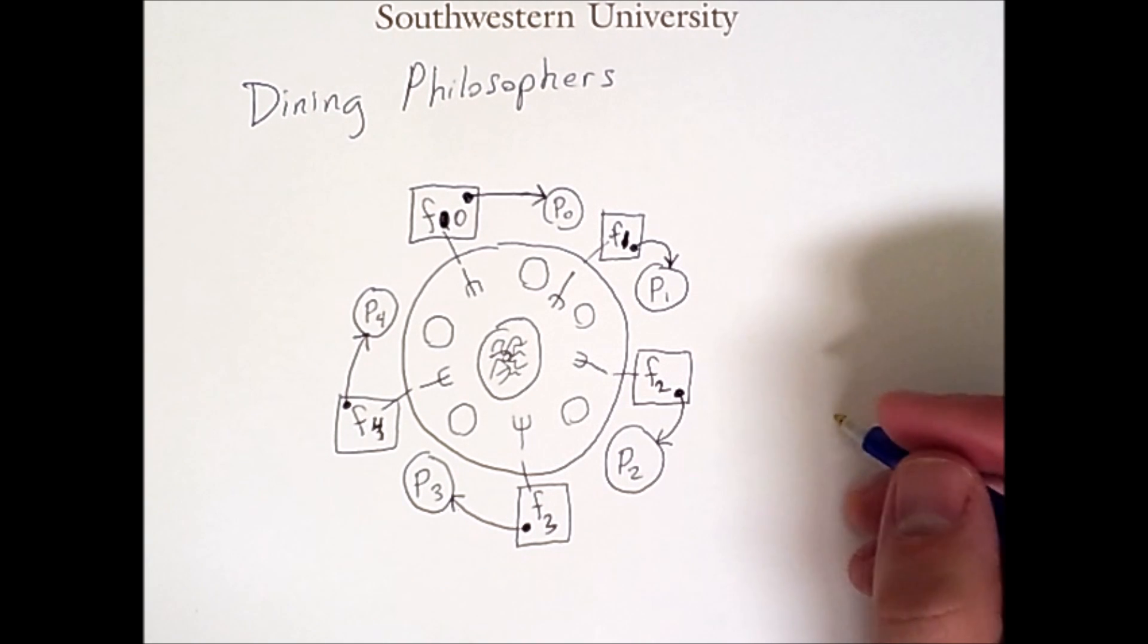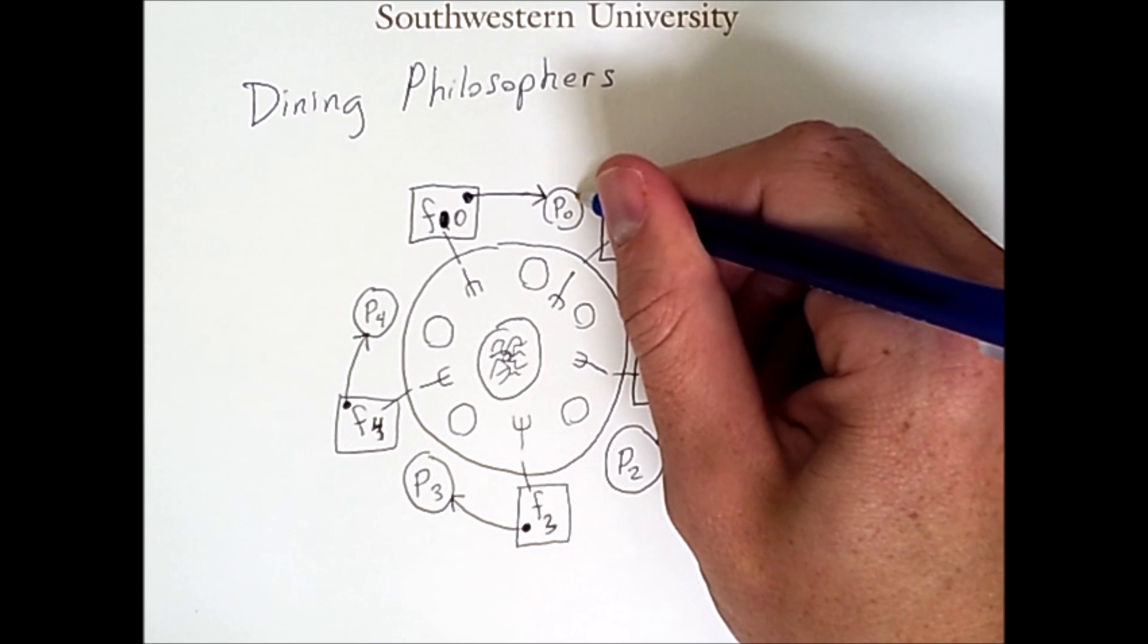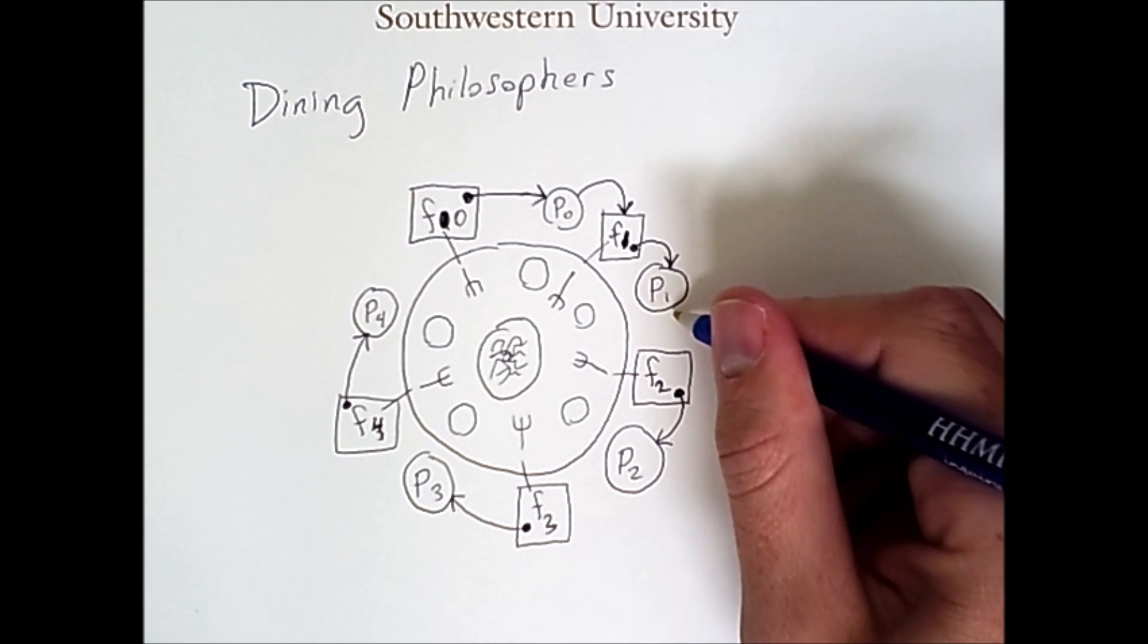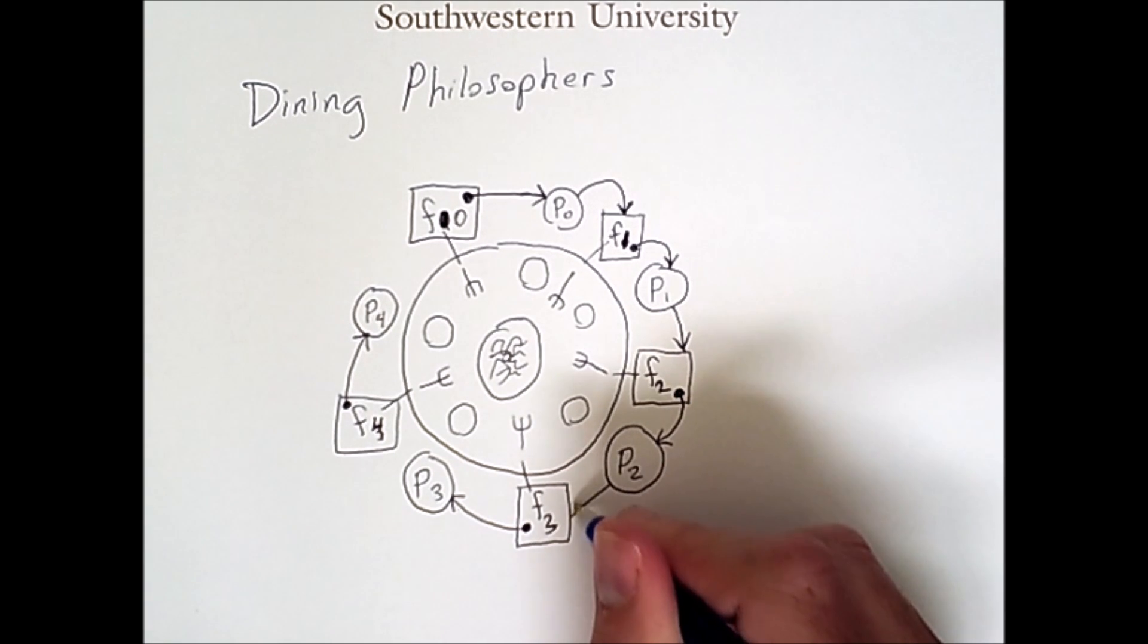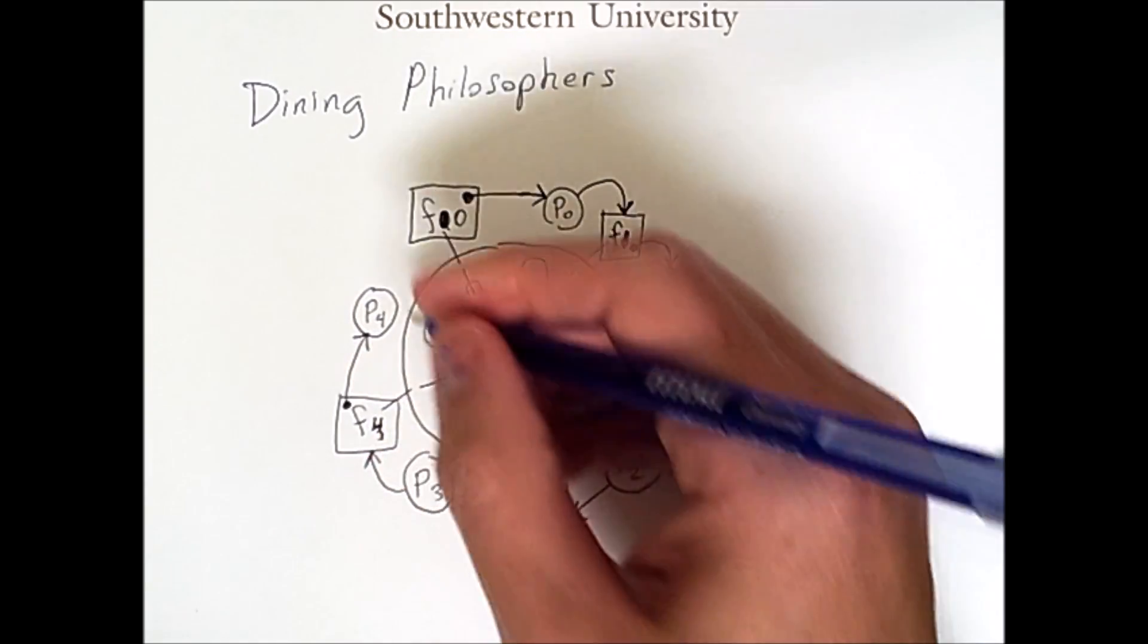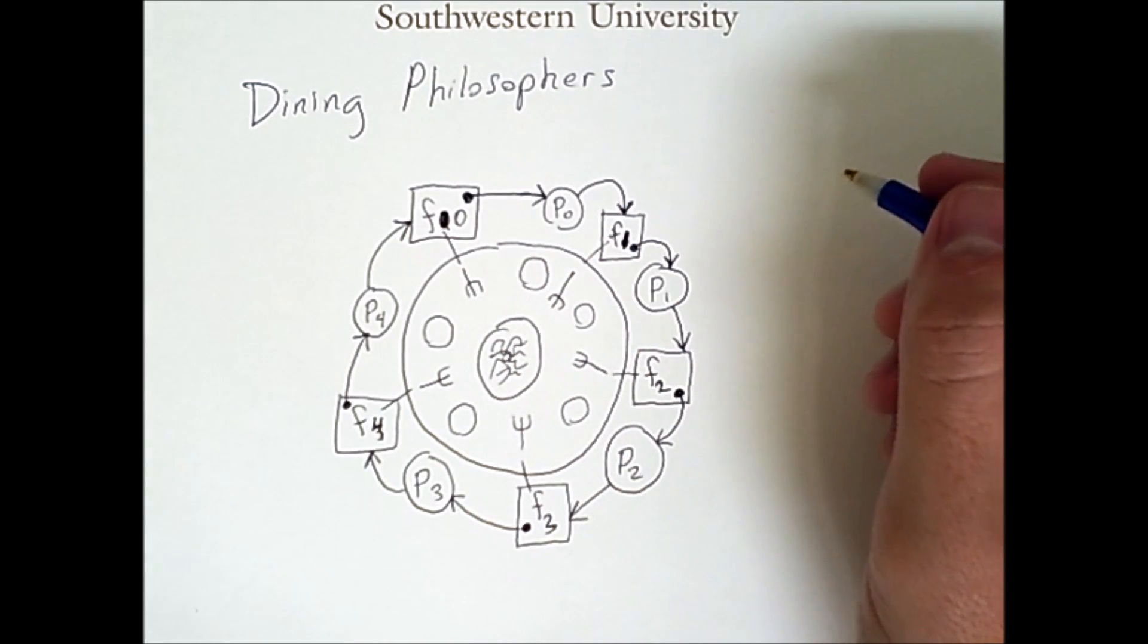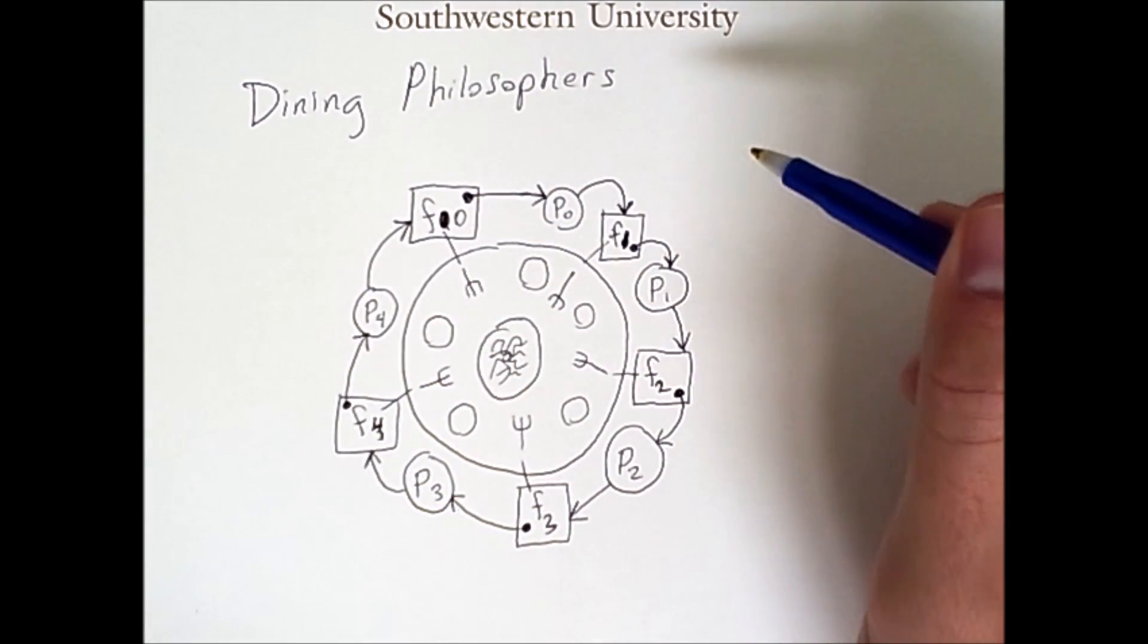There are no forks left to claim. When philosopher 0 attempts to get fork 1, we draw the arrow from the process to the fork to indicate that this resource has been requested but is not claimed. Similarly, philosopher 1 attempts to claim fork 2 or requests it. Philosopher 2 requests fork 3, philosopher 3 requests fork 4, and philosopher 4 requests fork 4 plus 1 mod 5, which is 0. And now we have a cycle in this directed graph. Hence, we have deadlock.